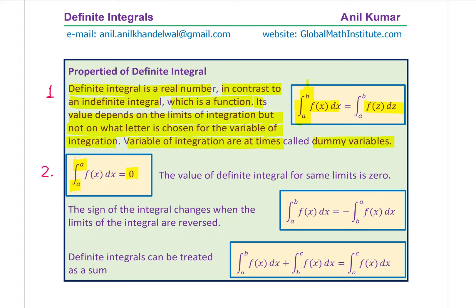The third property is that the sign of the integral changes when the limits are reversed. So if we have from a to b, reversing it to from b to a makes this a negative value. The fourth property is that definite integrals can be treated as a sum. For example, the integral from a to b plus the integral from b to c will result in an integral from a to c.